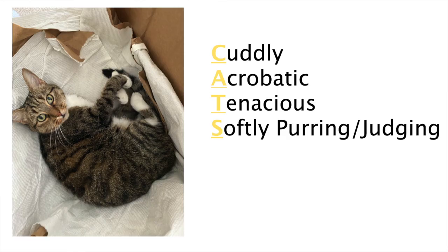Let me give you an example of what an acrostic poem looks like: Cuddly, acrobatic, tenacious, softly purring, judging. That's right — I'm talking about cats. But in the Hebrew language, that's what this oracle would look like using the first letters of the alphabet.